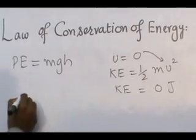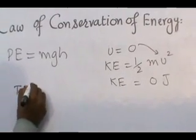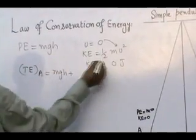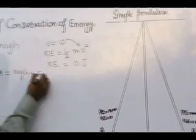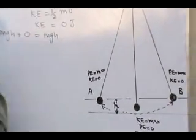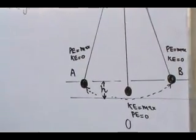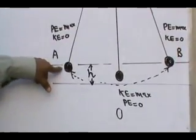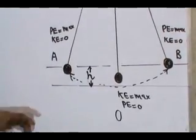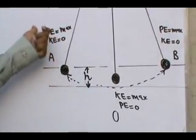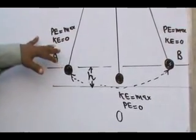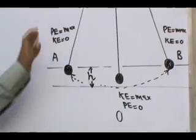Total energy at point A is equal to mgh plus zero, that is equal to mgh. Now when this bob moves from A to O position, its potential energy will be decreased while its kinetic energy will be increased due to increasing velocity.